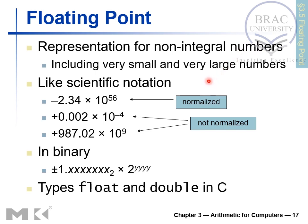Until now we have been discussing integer values, but when representing very large or very small numbers, integers may not be sufficient. We need to use floating point representation, which can represent non-integer numbers including very small and very large numbers. Like scientific notation — for example, minus 2.34 times 10 to the power 56 — in binary, since we only have zeros and ones and the base is two, we have types like float and double in C.